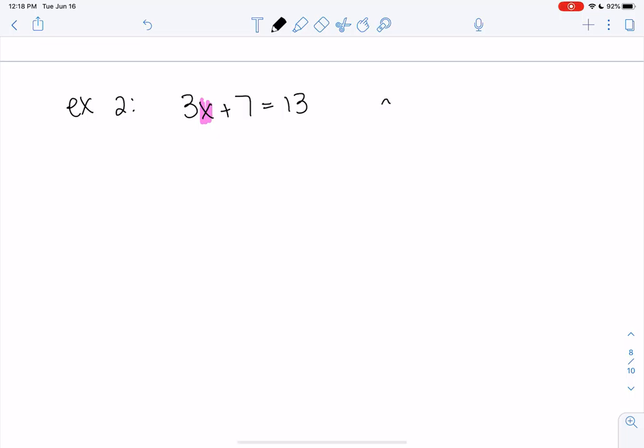So in this example, the opposite of 7, or adding 7, is subtracting 7. So this one we're going to subtract, because that's the opposite.